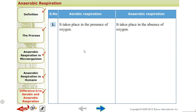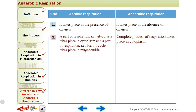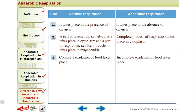Aerobic and anaerobic respiration are now clear. Aerobic takes place in the presence of oxygen; anaerobic takes place in the absence or lack of oxygen. Glycolysis is common to both, occurring in the cytoplasm. The Krebs cycle occurs in the mitochondria in aerobic respiration, while the entire anaerobic respiration takes place in the cytoplasm.